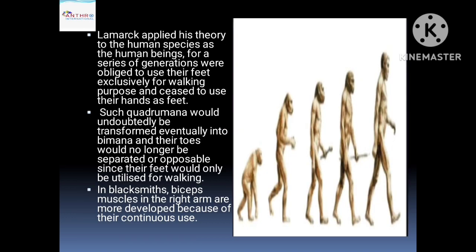Lamarck also applied the theory to the human species. Human beings for series of generations were obliged to use their feet exclusively for walking, and when they started using their hands, they became bipedal — changing from quadrupedal to bipedal. He also gave the example of a blacksmith whose bicep muscles in the right arm are more developed because of their continuous use.